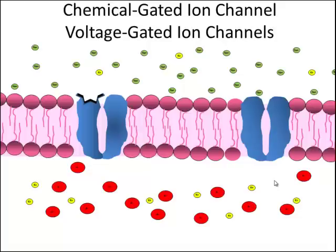There are a number of ways that ion channels can open up in the cell membrane. Here are two ways that are really important when understanding how a neuron sends signals to other neurons.